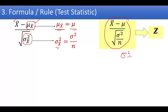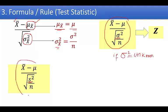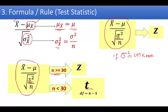If the population variance is unknown, we can use sample variance s-squared instead of sigma-squared. The resulting expression follows the Z distribution only if n is greater than or equal to 30. If the sample size is less than 30, it follows the T distribution with degrees of freedom n minus 1. So we use Z test when population variance is known, or when sample size is 30 or more; otherwise we use T test.